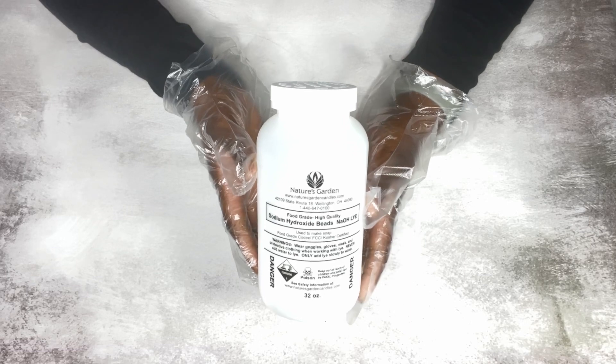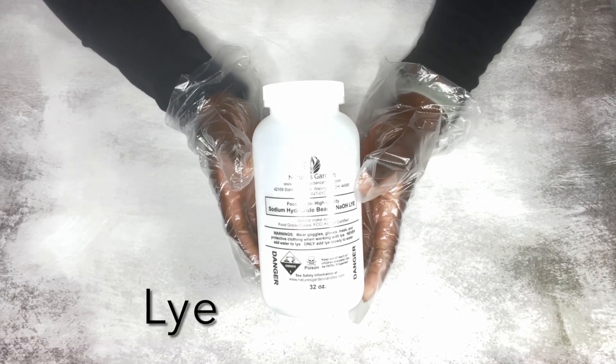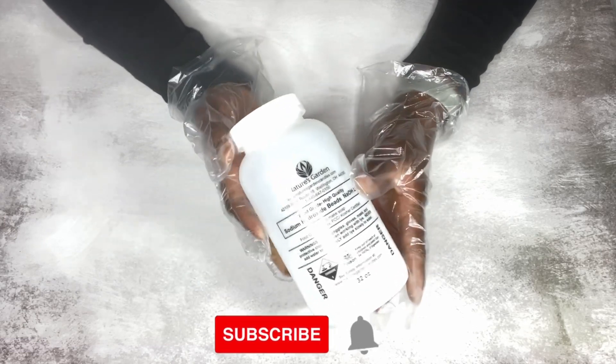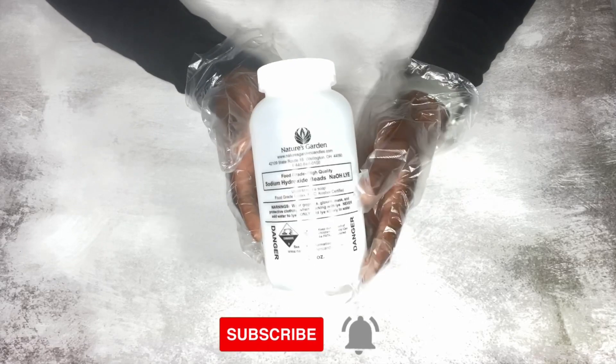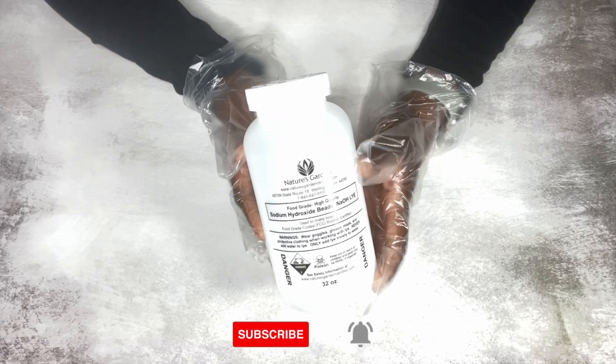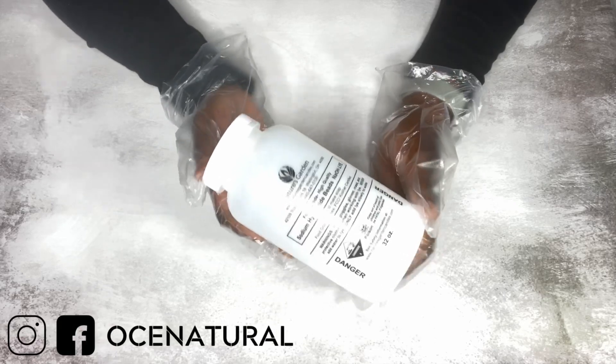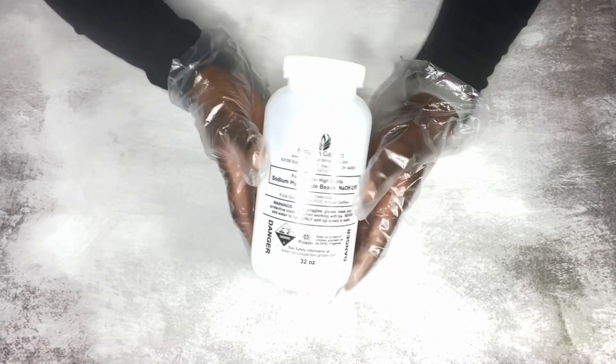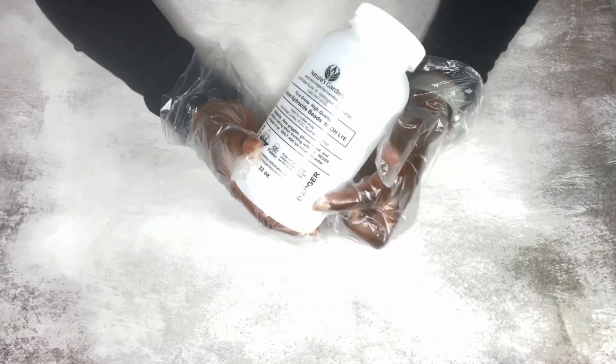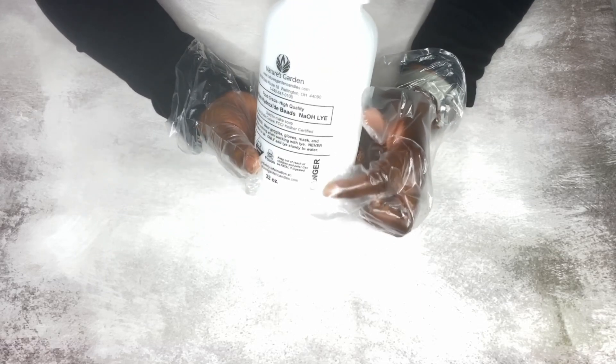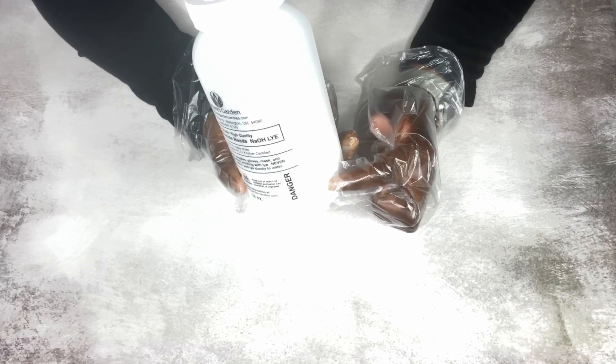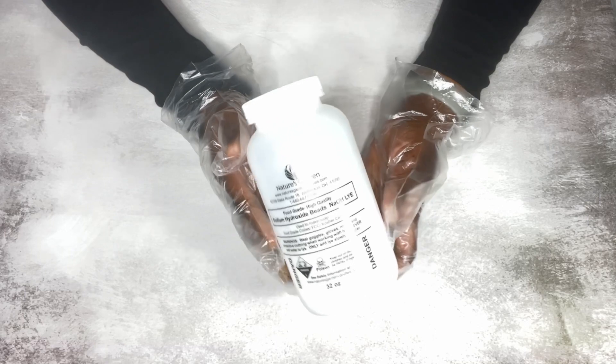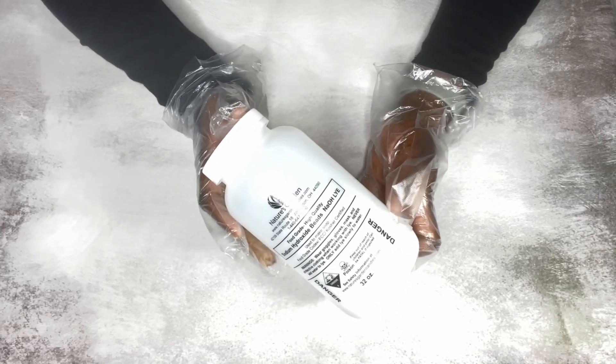So to make the sodium hydroxide solution, you will need lye. Lye is what you use to make your cold process soap, and you will need this to raise the pH of your products. But you want to be very careful when you're working with lye because it is very corrosive. It can burn your skin. You do not want this getting into your eyes, it can cause blindness as well. So please be careful. If you've never used lye, please do your research. I will leave certain videos in the description box if you want to check that out on lye safety. But to do this, make sure you have on your goggles, you have on gloves, you have on long sleeves just to be safe.